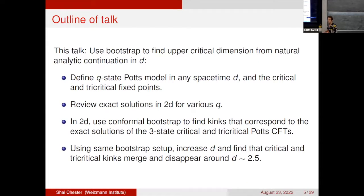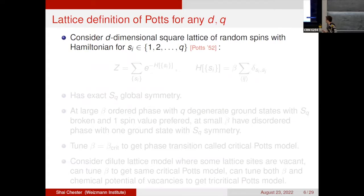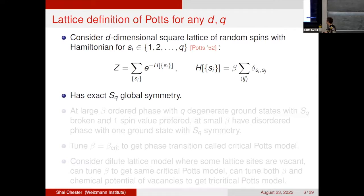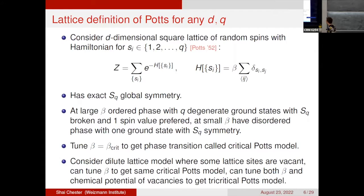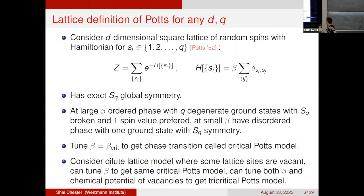The lattice definition of the Potts model for any d and q considers a d-dimensional square lattice of spins ranging from 1 to q with a standard nearest-neighbor Hamiltonian, giving an exact S_q global symmetry. At large inverse temperature, there is an ordered phase with q degenerate ground states and broken S_q symmetry; at small inverse temperature, a disordered phase with a single S_q-symmetric ground state. Tuning the inverse temperature to a critical value gives the critical Potts model. A dilute lattice model with vacant sites allows tuning both inverse temperature and chemical potential of vacancies, yielding the tricritical Potts model.